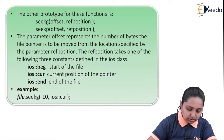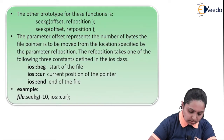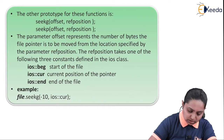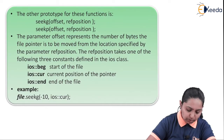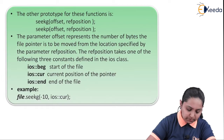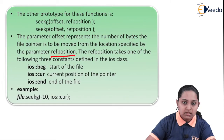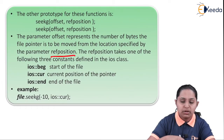The prototype for these functions is: seekg(offset, reference_position) and seekp(offset, reference_position). The parameter offset represents the number of bytes the file pointer is to be moved from the location specified by the parameter reference position. This offset tells you which location the pointer is pointing to.